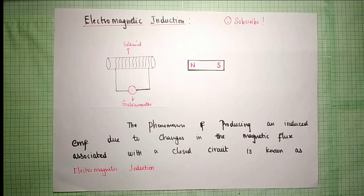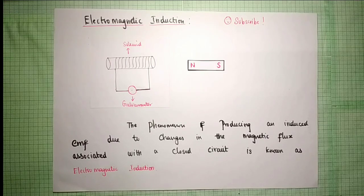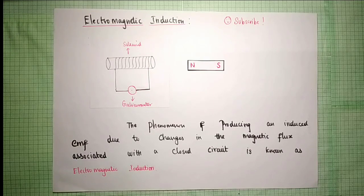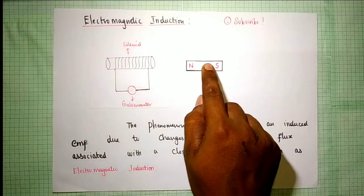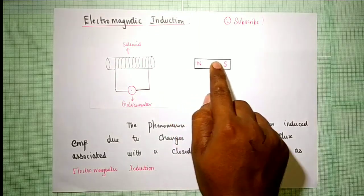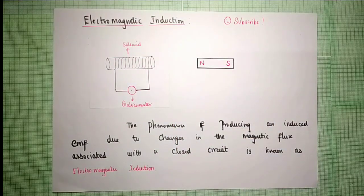Consider a solenoid or coil — let's look at an image. It's connected to a galvanometer. A bar magnet is placed near it. If the bar magnet is stationary, there is no current flow. When the bar magnet is in relative motion — moving forward or backward — current flows. If the bar magnet is again stationary, there is no current flow.